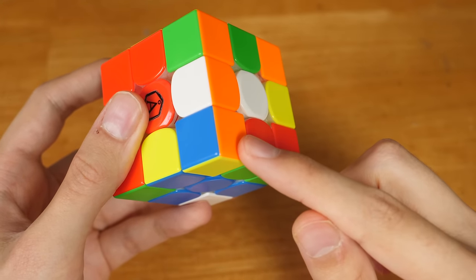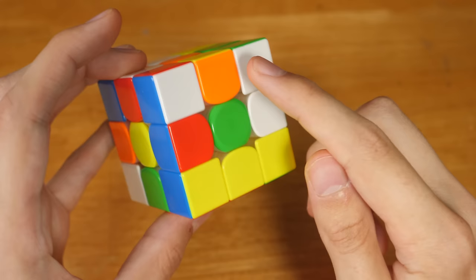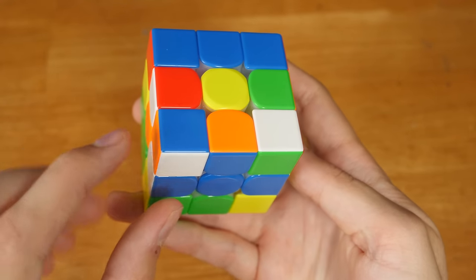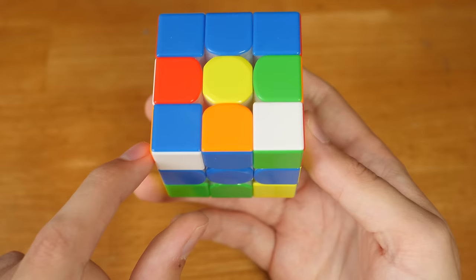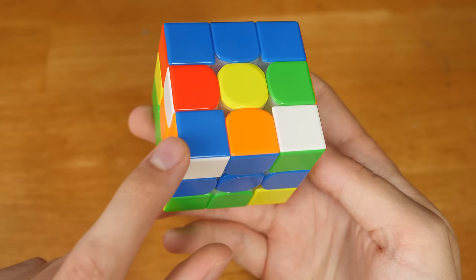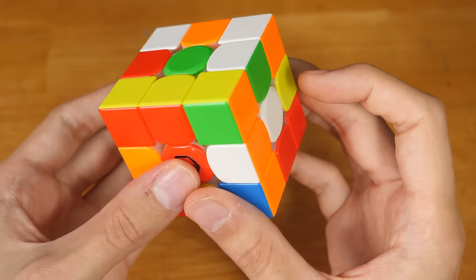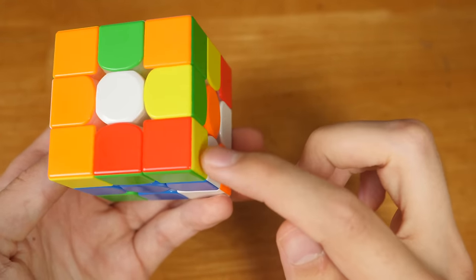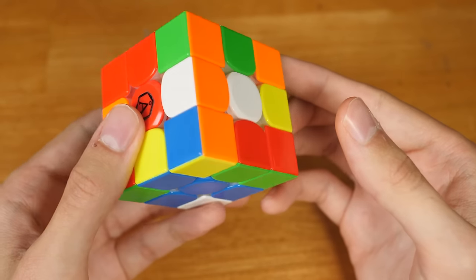We can also plan the second pair with this corner and this edge, which we'll solve into this back slot. And since this corner here will be unaffected by the solution of the X-cross and second pair, we can plan the third pair by finding the edge that goes with it and solving it into this slot after the first two pairs.